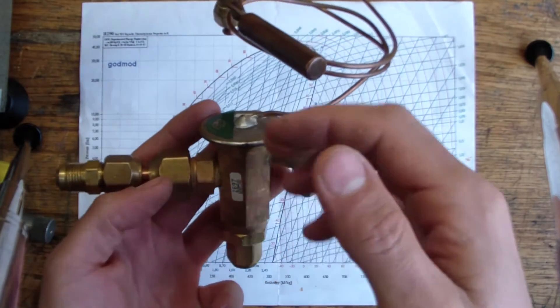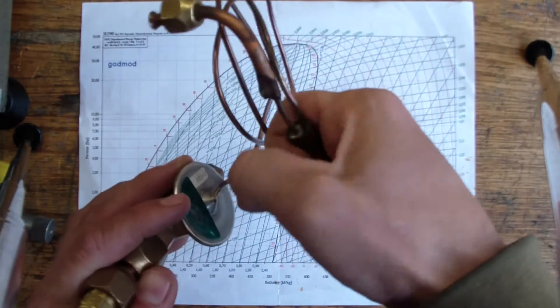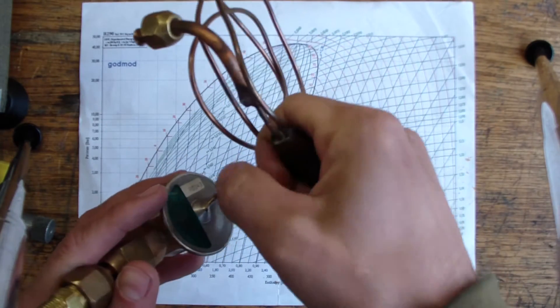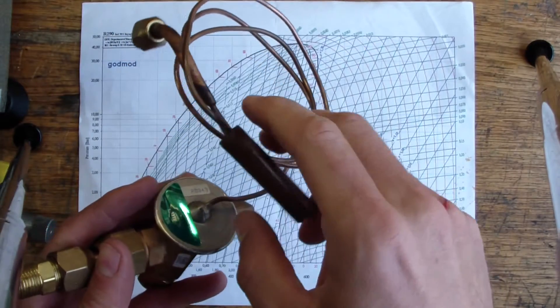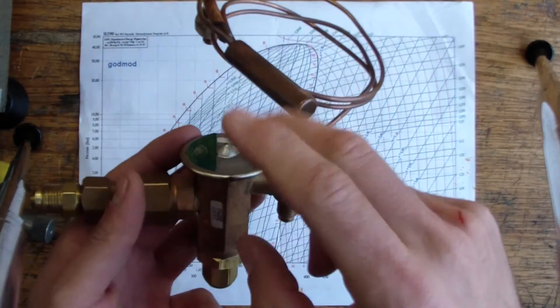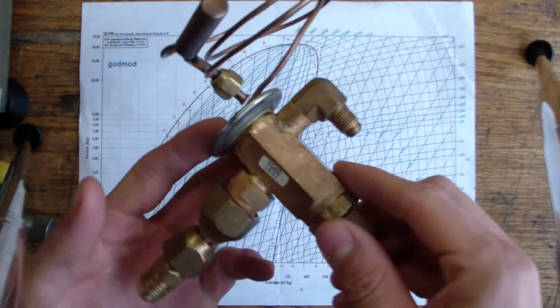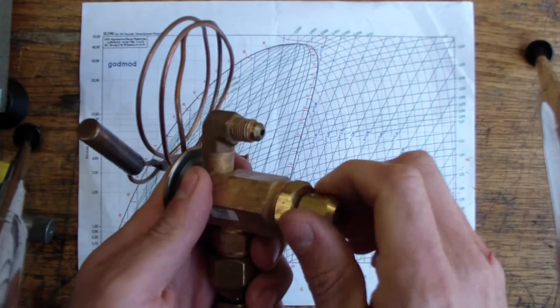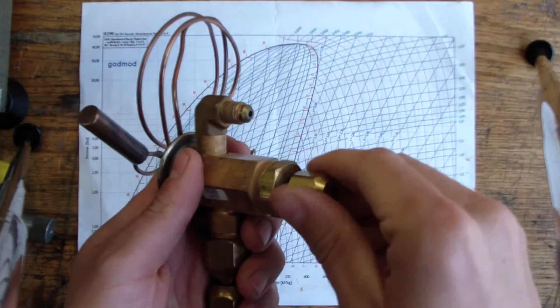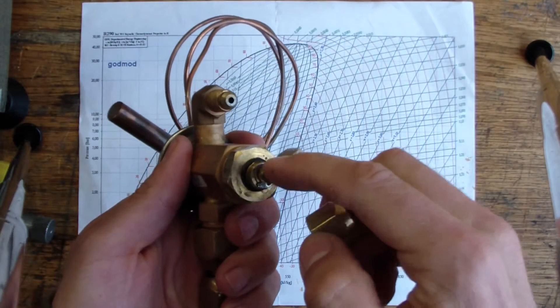Until the evaporator is properly fed, the suction line temperature drops, the temperature of the sensing bulb drops, saturation temperature inside the system drops. The diaphragm is allowed to retract by the spring applying pressure to it. The amount of superheat that's designed for the system can be adjusted to some extent with this superheat control.